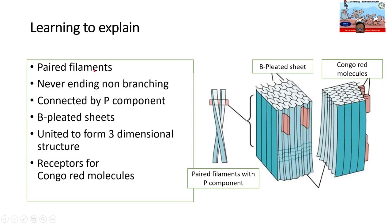Let us describe it once again: paired filaments — never-ending, non-branching fibrils — connected by the P-component, arranged as beta-pleated sheets, united to form a three-dimensional structure. These have receptors for the Congo red molecules. I hope you will be able to recite this without faulting.